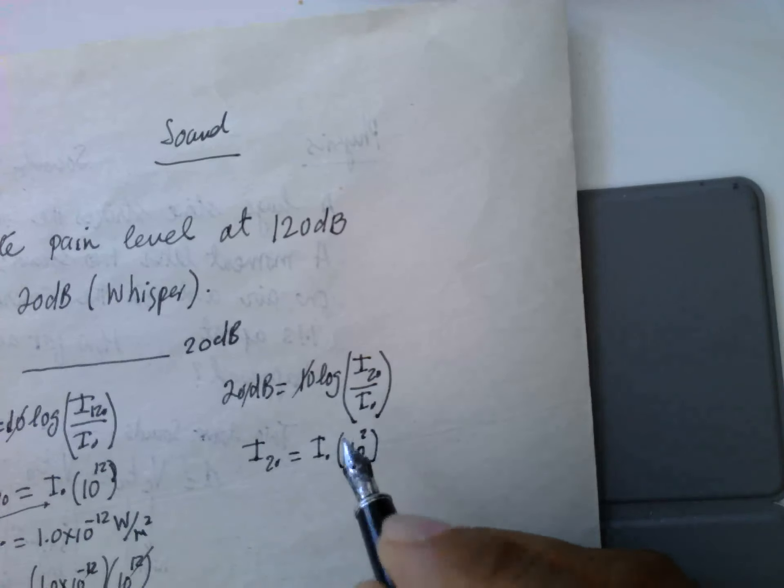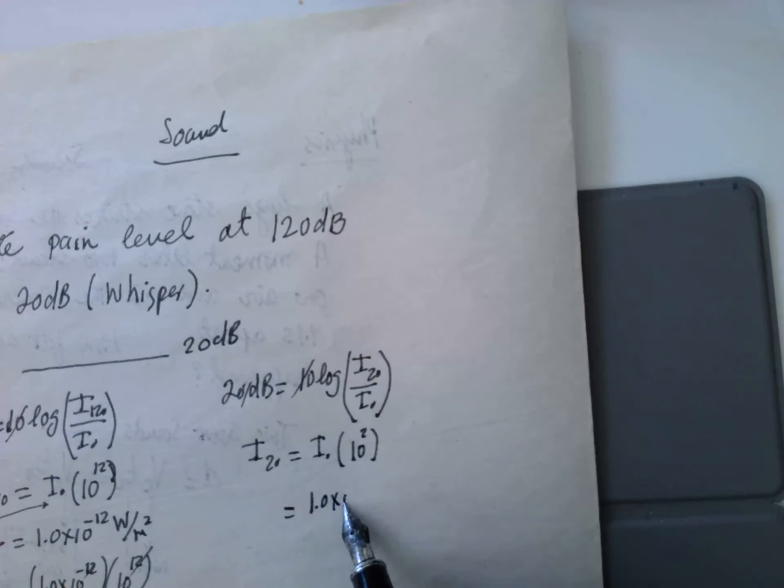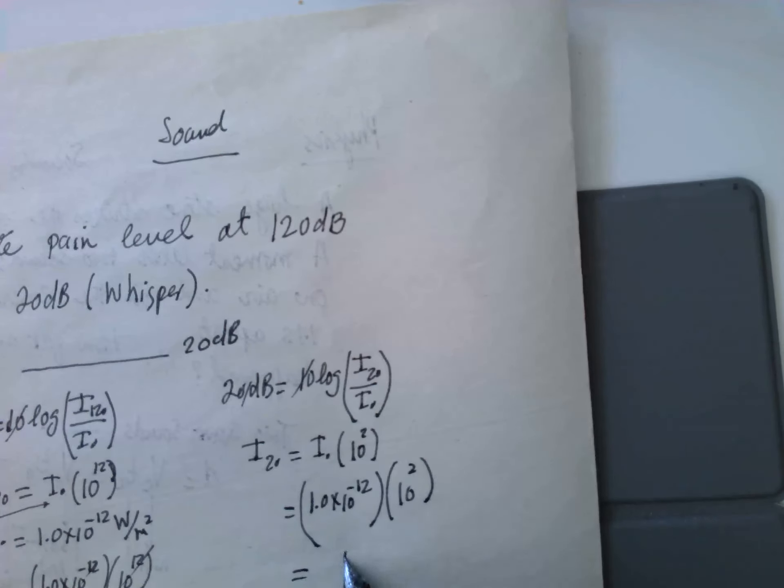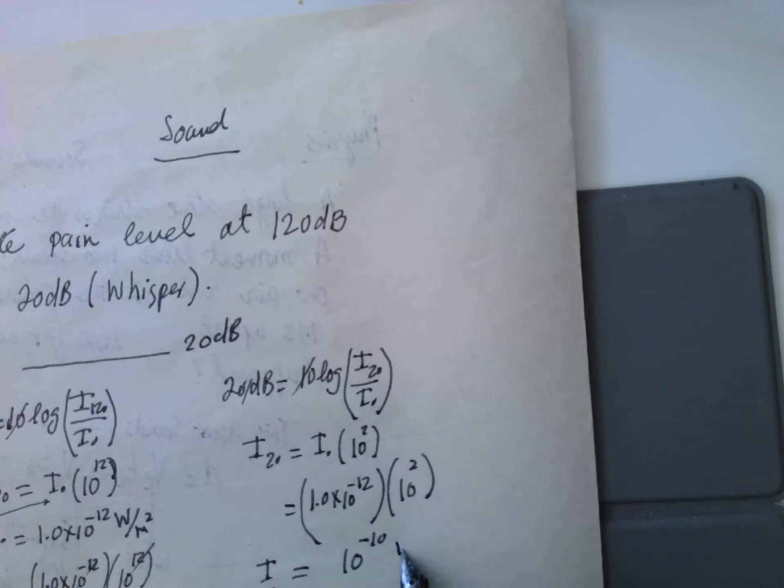So I₀ is 1.0 into 10 to the power minus 12, and 10 to the power 2. So this is equal to 10 to the power minus 10, I₂₀ dB, 10⁻¹⁰ watt per meter squared.